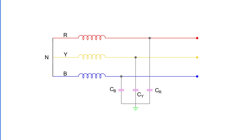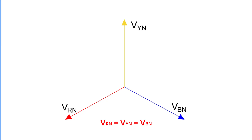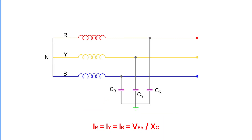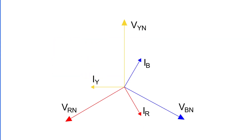Now let's talk about the behavior of an ungrounded neutral system under normal steady-state and balanced operating conditions. Assume the transmission line is perfectly transposed, meaning each conductor has the same capacitance to ground: Cr = Cy = Cb = C. The phase voltages Vrn, Vyn, and Vbn have the same magnitude and are displaced from each other by 120 degrees. Due to this symmetry, the capacitive currents from each phase to ground — Ir, Iy, and Ib — are equal in magnitude: Ir = Iy = Ib = Vph / Xc, where Vph is the phase voltage and Xc is the capacitive reactance of the line to ground.